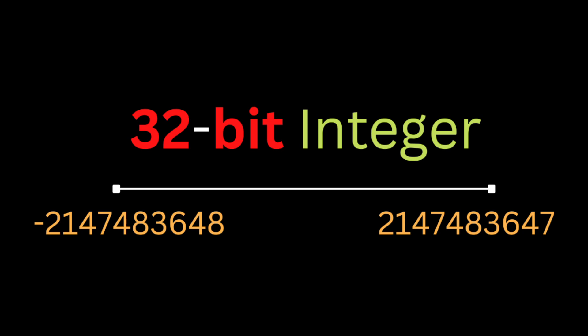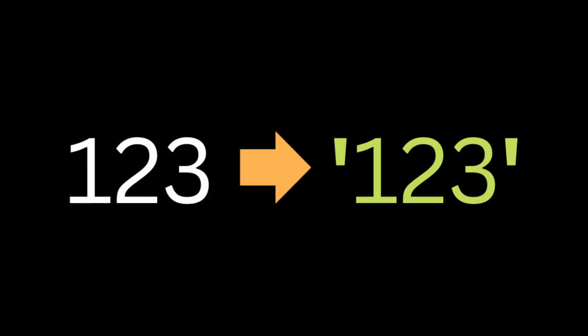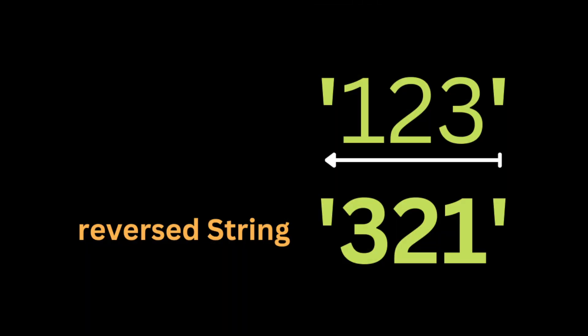So how are we going to solve this problem? Let's say for example we have an input integer 123. The first thing we're going to do is convert the integer to a string so we can easily access each individual character using an index and concatenate strings using the plus operator. After that, we initialize a variable called 'reversed string' that's going to hold all the reversed characters before we convert them back to an integer.